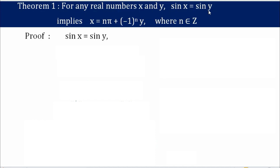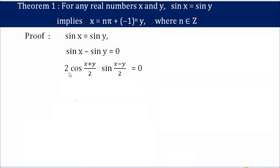We take sine x equals sine y and need to prove the result. Starting with sine x equals sine y, I can write it as sine x minus sine y equals 0. Using the formula 2 cos((x+y)/2) times sin((x-y)/2) equals 0. Dividing by 2, this 2 disappears.